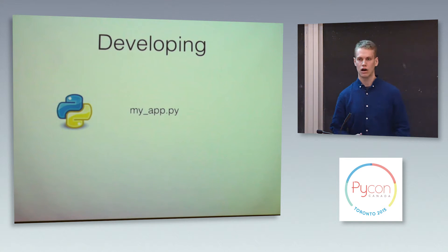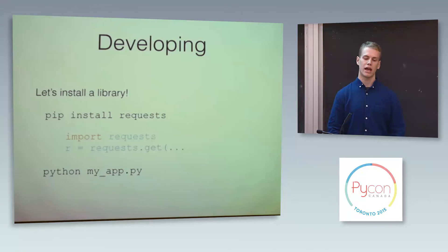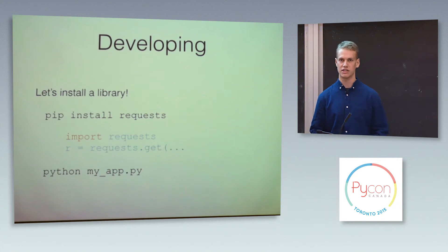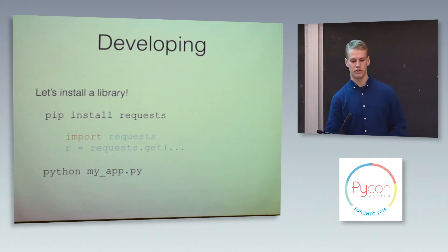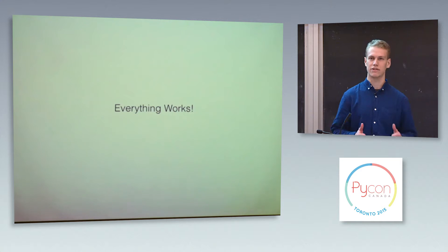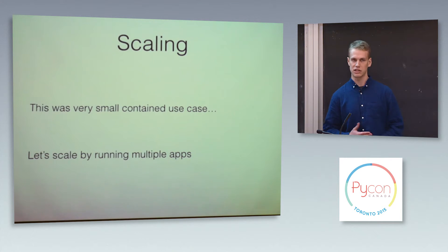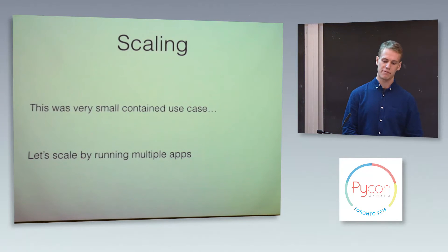Let's try developing with our very simple environment. We're going to develop some example Python application — let's call it MyApp.py. Let's say we want to add the ability to make HTTP requests. We install the requests library using pip, use it in our code, and run MyApp. We've installed requests, everything works. So far just using the Python interpreter has been fine for us.